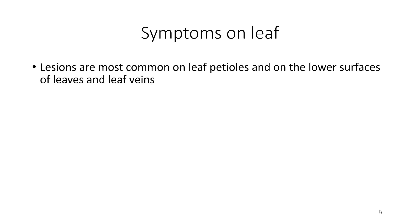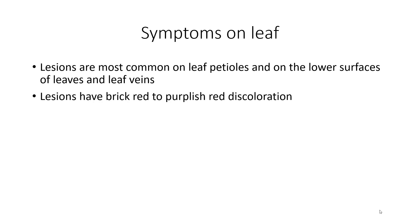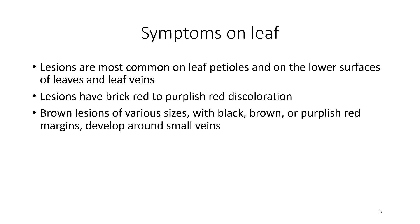Later on, the spots become sunken and filled with salmon-colored ooze. Symptoms on leaves: lesions are most common on leaf petioles and on lower surfaces of leaves and leaf veins. Lesions have black-red to purplish-red discoloration. Lesions of various sizes — black, brown, or purplish-red margins — develop around small veins.